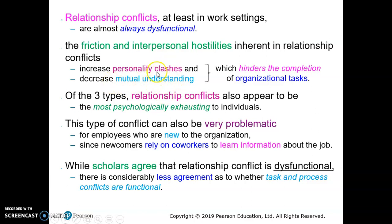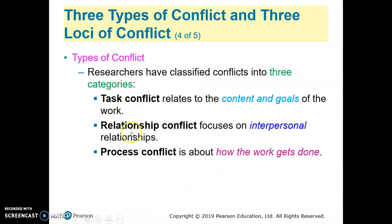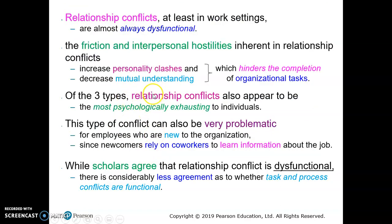For example, if we have a personality clash such as neuroticism or emotional instability, it is difficult to predict behaviour, which can create problems when interacting with others. This decreases mutual understanding between individuals, which can hinder the completion of organizational tasks. Of all three types, relationship conflict is considered the most psychologically exhausting because it is very difficult to satisfy human beings.